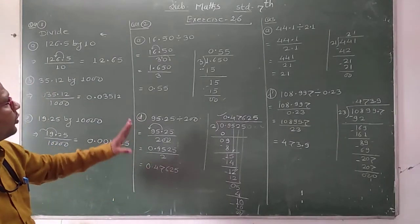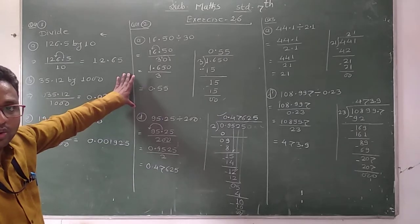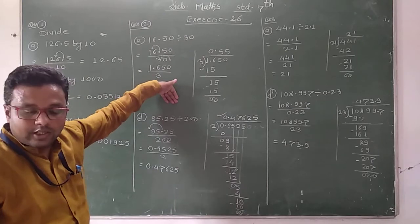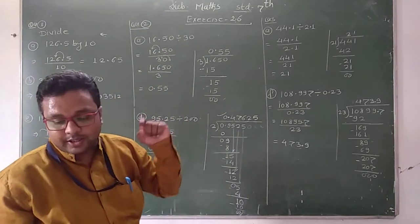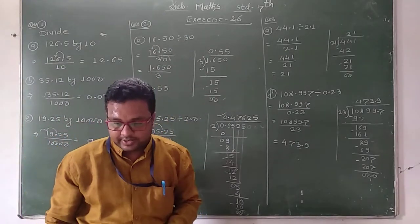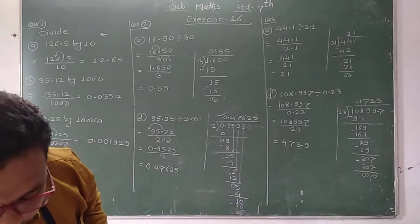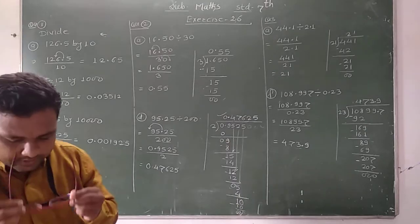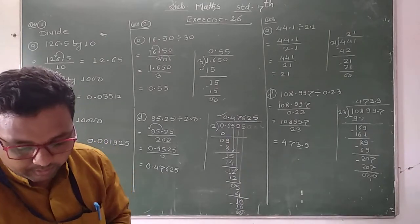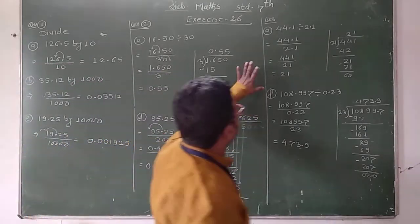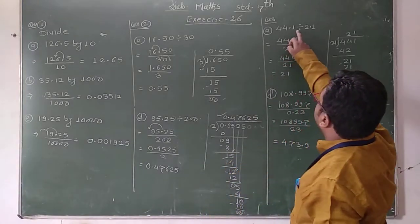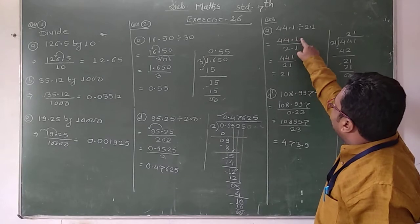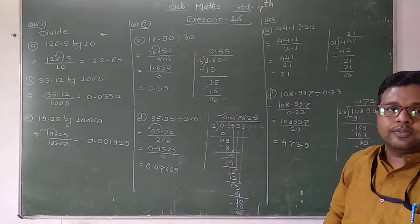I hope you understand the second type also — how to do the division of a decimal number by these numbers. In this way you have to complete the remaining questions of question number 2. Now see the next type: question number 3. In question number 3 there is division of a decimal number by a decimal number. Here I take the first question: 44.1 divided by 2.1.